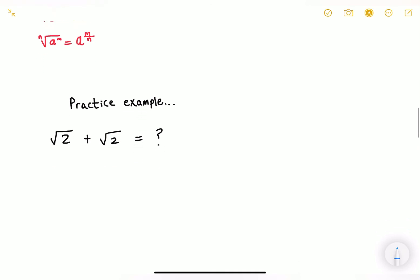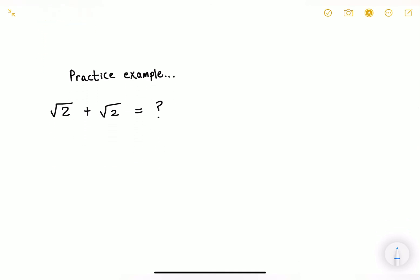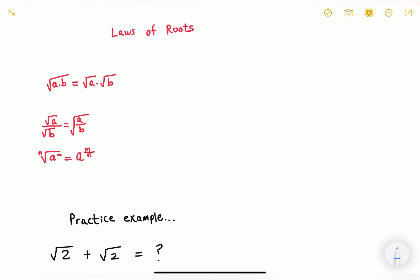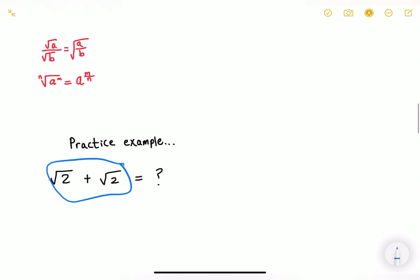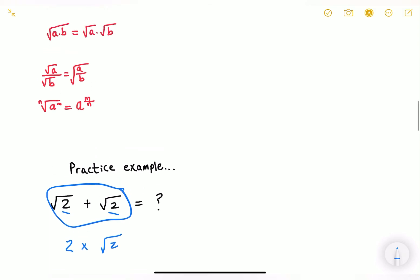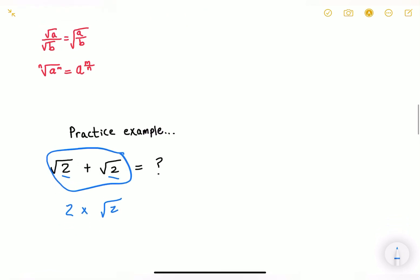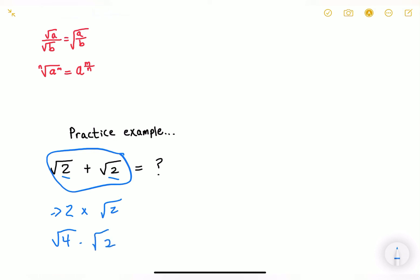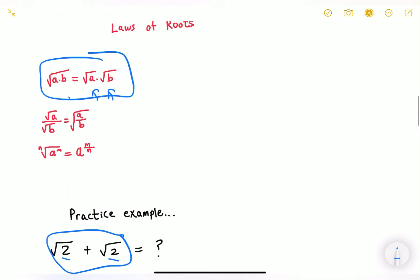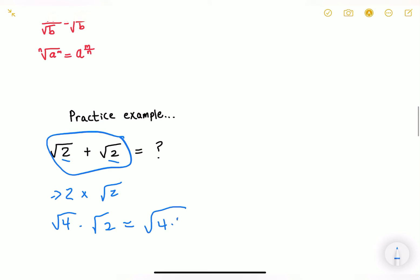Before we see the laws in action, let's do a practice example: what is radical of 2 plus radical of 2? We can rewrite this as 2 times radical of 2, because we have it twice. Using our multiplication rule, we bring the 2 inside the radical: 2 squared is 4, so we get radical of 4 times 2, which equals radical of 8. That's our answer.